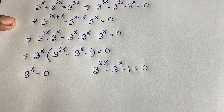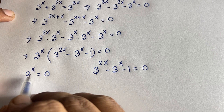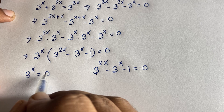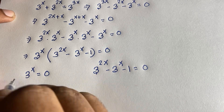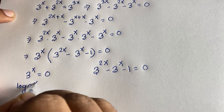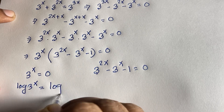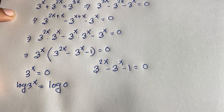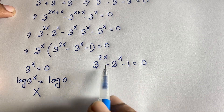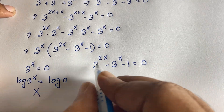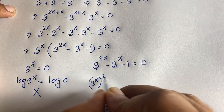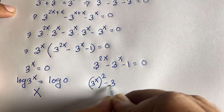Look — 3 to the power of something can never equal 0. If we apply log to both sides, log of 3 to the power x equals log 0, but log 0 is undefined, so Case 1 is rejected. For Case 2, applying the exponential law, we rewrite 3 to the power 2x as (3 to the power x) squared, giving us: (3 to the power x) squared minus 3 to the power x minus 1 equals 0.